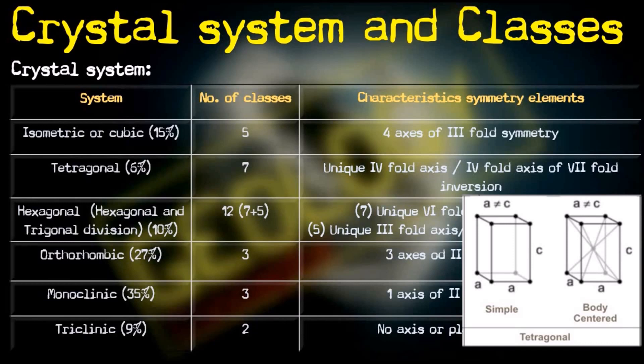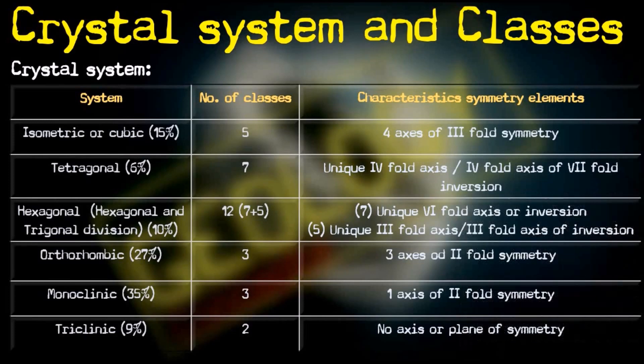Every system has some characteristic symmetry elements attached to it. The isometric or cubic system has four axes of threefold symmetry — every form or class of the isometric system will have four axes of threefold symmetry. The tetragonal system will have a unique fourfold axis or fourfold axis of sixfold inversion.